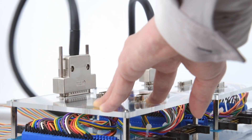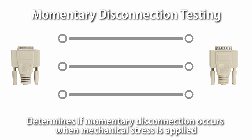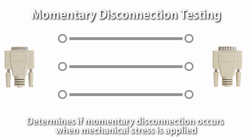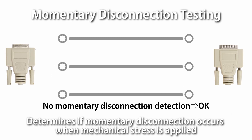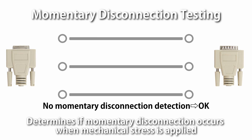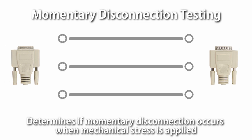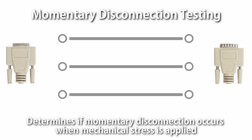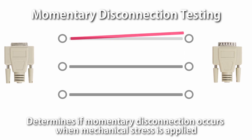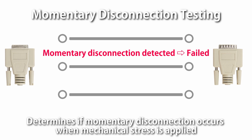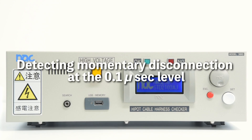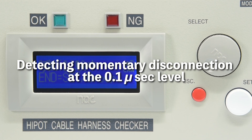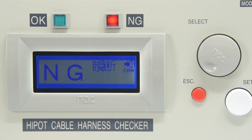Momentary disconnection testing is a test to determine the occurrence of momentary disconnection. The test is conducted by applying stresses such as shock, vibration, bending, and tension while monitoring the continuity state. Some models are capable of detecting momentary disconnection at the 0.1 microsecond level.